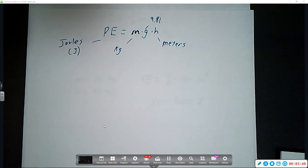If you were on a different planet, or if you were on the moon, this value would change based on the force of gravity on whatever celestial body you happen to be on. So, to calculate, let's have an example.